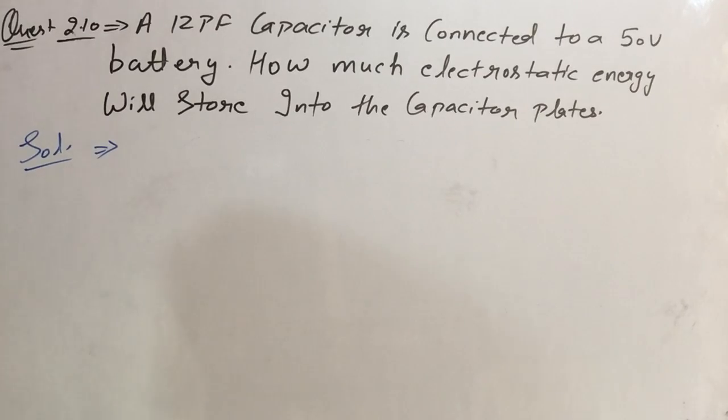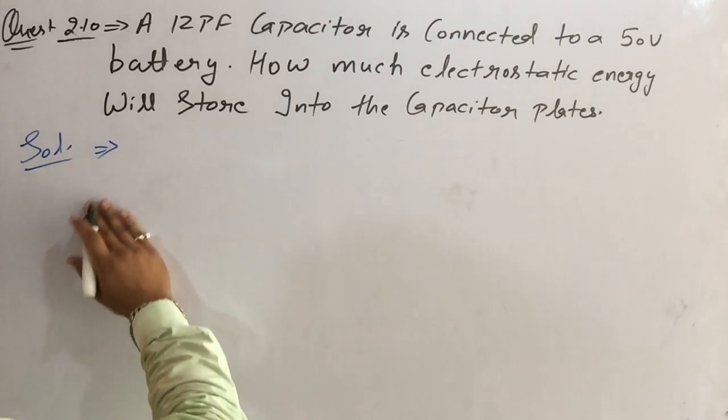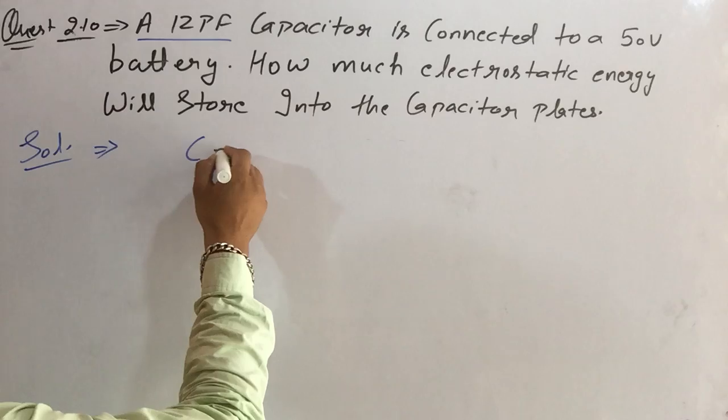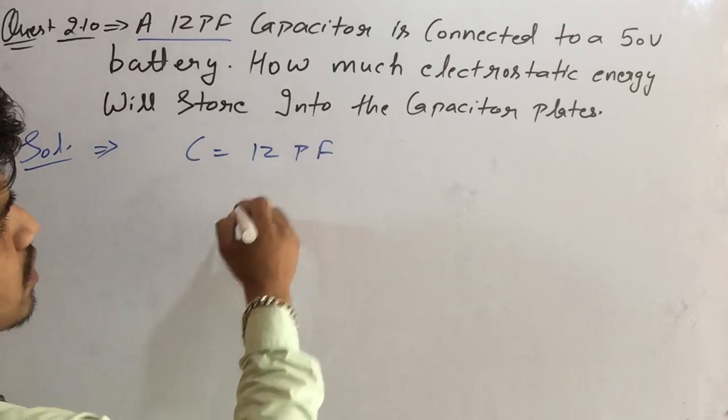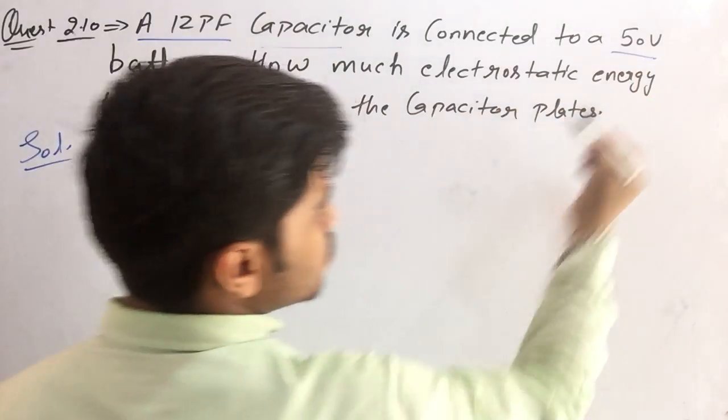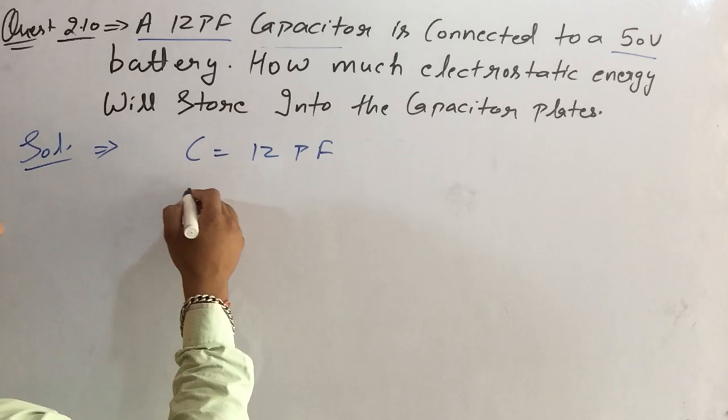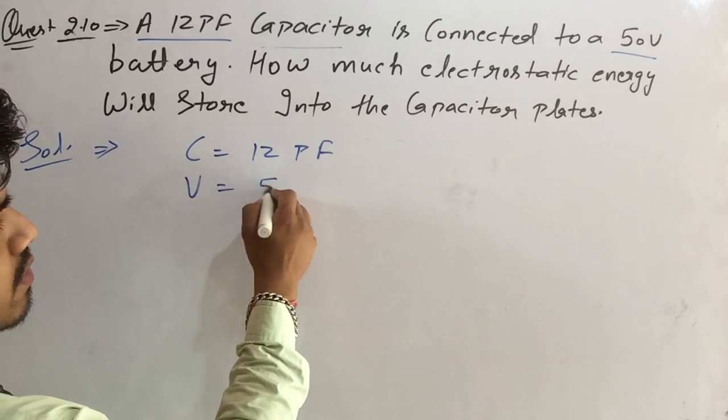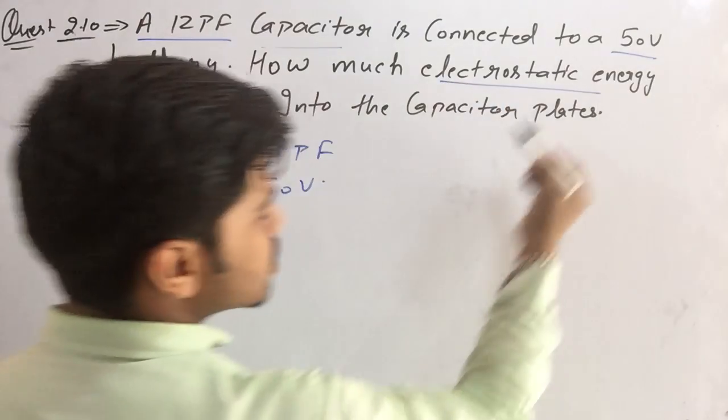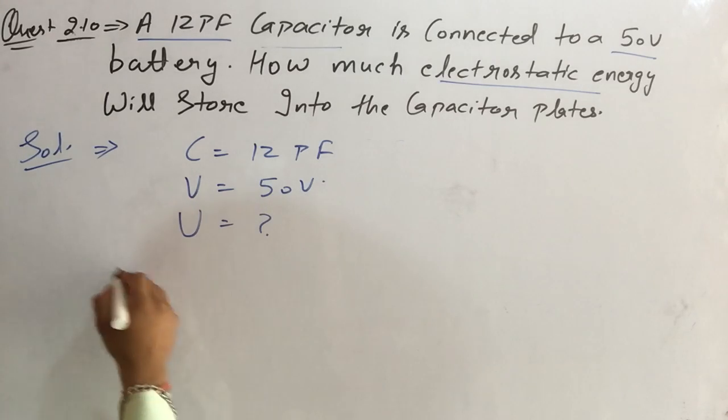Question number 2.10: We have given a capacitance of 12 picofarad connected to a 50 volt supply. The potential difference is given as 50 volts, and we have to find how much electrical energy. The formula for energy stored...